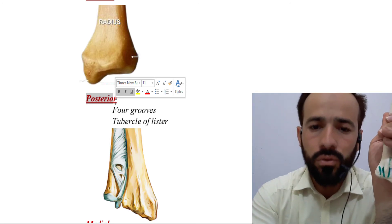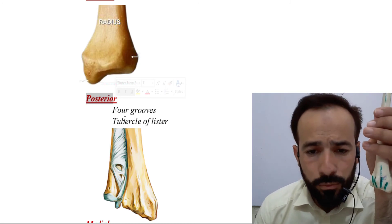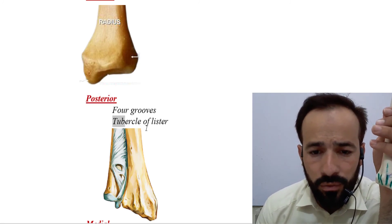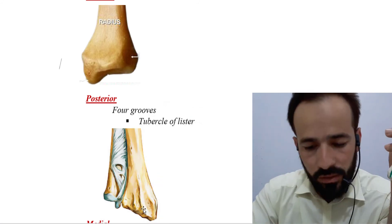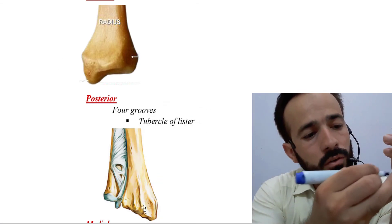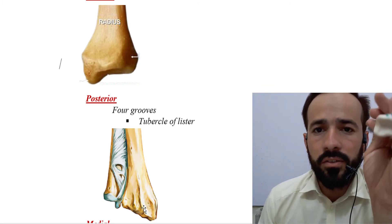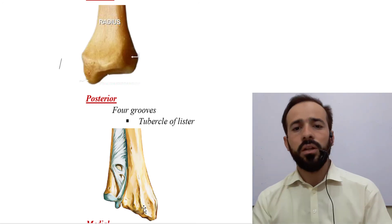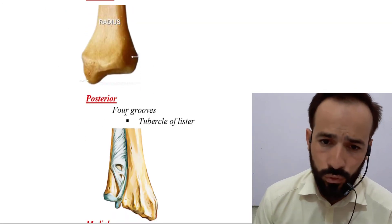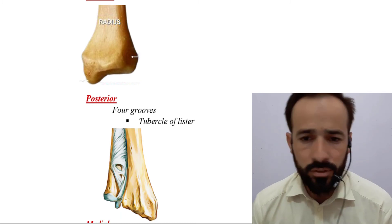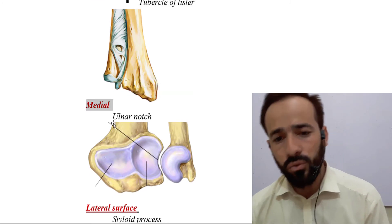On the posterior surface there is also a prominent tubercle called the tubercle of Lister. So the posterior surface has five grooves and the tubercle of Lister.